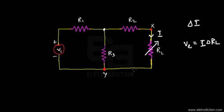In this situation, we will basically be shorting out all the other voltage sources present in the network, but only keeping their internal resistances.